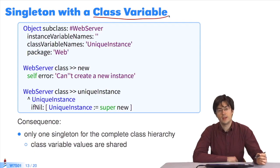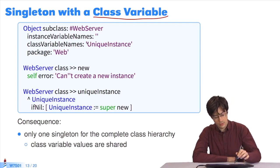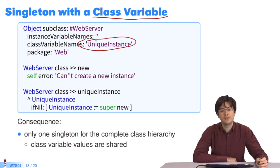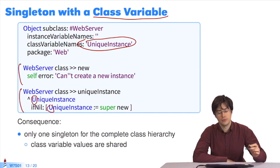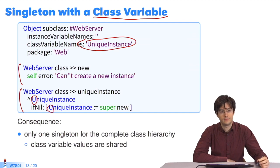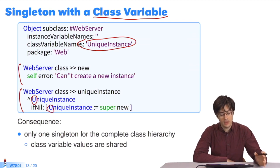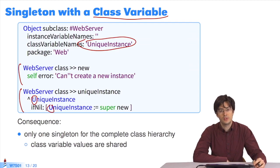If we now use a class variable, we edit the class on the instance side and we add unique instance using a capital U. Again, we disallow sending new messages and implement unique instance. The only difference is that we use a capital U. As a result of choosing a class variable, the class hierarchy has only one singleton. If web server has three subclasses, these three subclasses and web server share the same singleton. Thus, we have one instance shared by all.